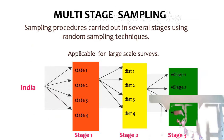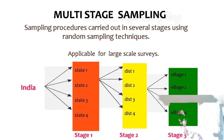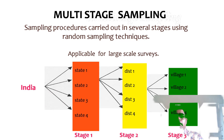After cluster sampling we have multi-stage sampling, a procedure carried out in several stages using random sampling techniques, applicable for large-scale surveys. For example, a country is divided into four states (stage one), from each state into four districts (stage two), and from each district into four villages (stage three).